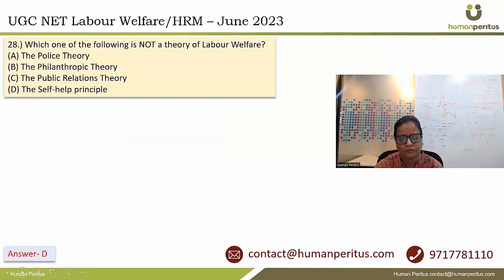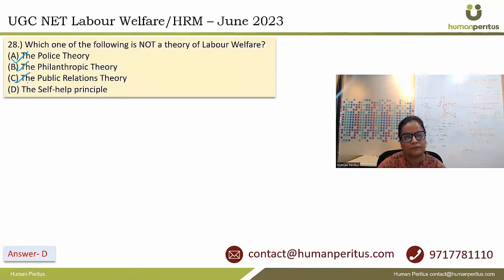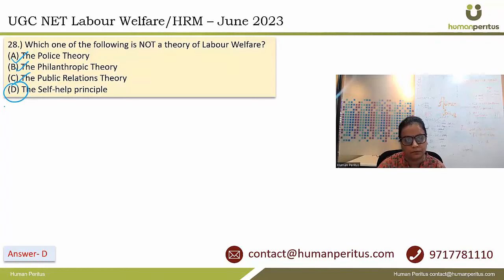Which one of the following is not a theory of labour welfare? Police theory, philanthropic theory, and public relations theory are all theories of labour welfare. The only one not related to labour welfare is the self-help principle. So the answer is option D.